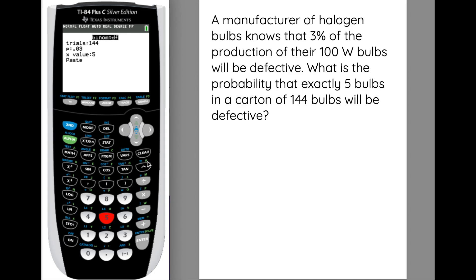So we type in five, and we go down to paste, and we hit enter. And now it's written it out as a binomial PDF function. To do the calculation, we hit enter one more time, and we see we get 0.169. So that's about 16.9 percent chance that five of them will be defective.